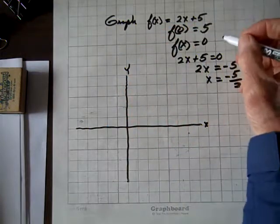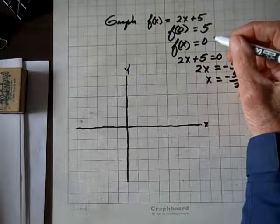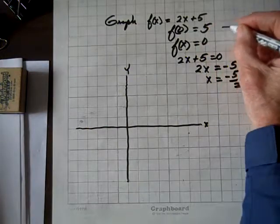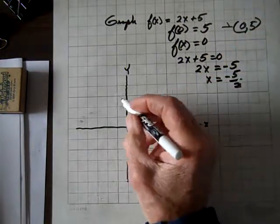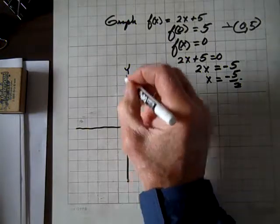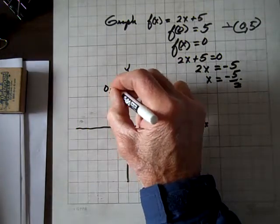So for the y-intercept, we've got the ordered pair (0, 5). So this goes to (0, 5). And let's call this (0, 5) right here.